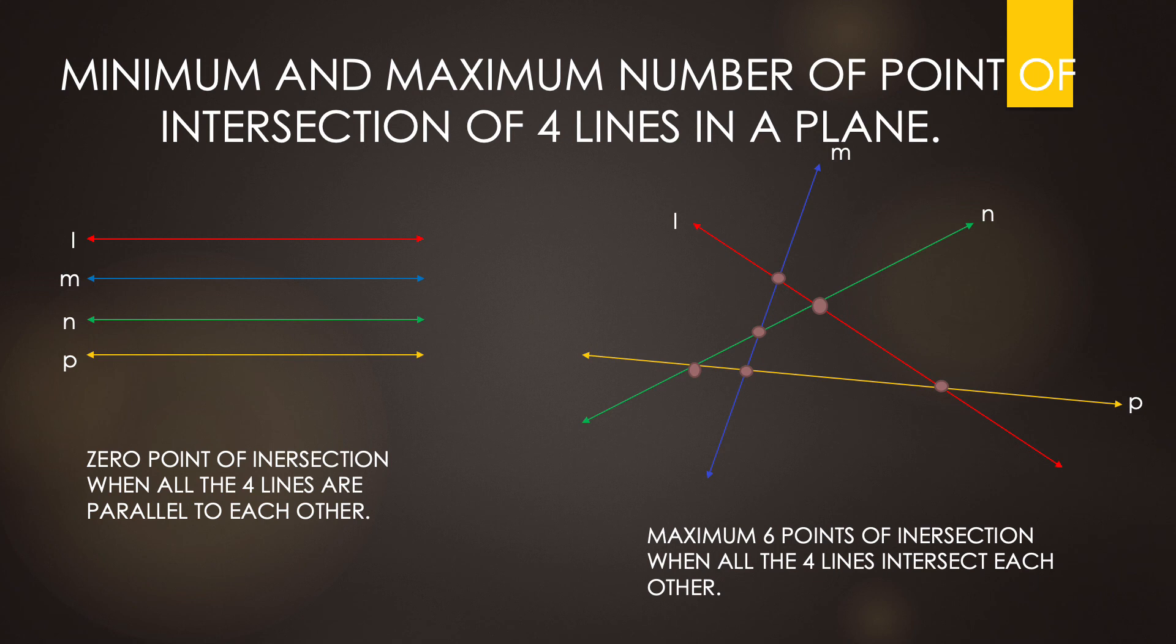Therefore, we can say maximum six points of intersection when four lines intersect each other.